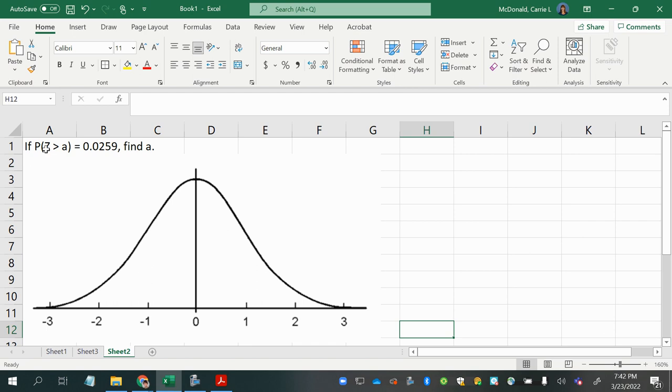If the probability that Z is greater than A is equal to 0.0259, find A.